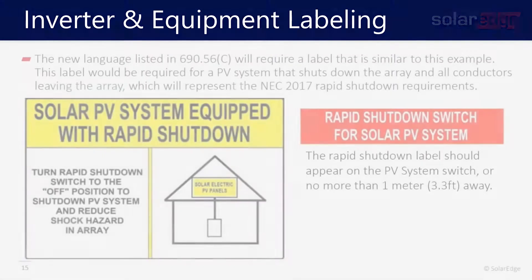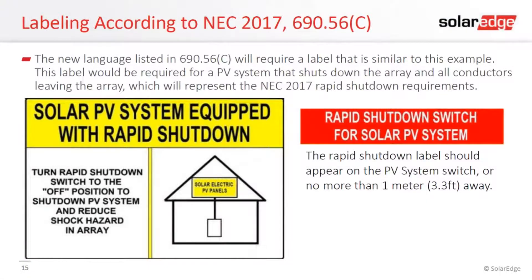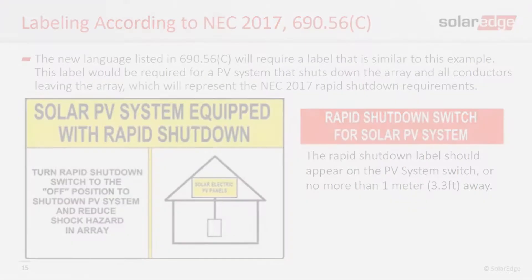Labeling for rapid shutdown changed a little bit in the 2017 code. The label reads: 'Solar PV system equipped with rapid shutdown — turn the rapid shutdown switch to the off position to shut down the PV system and reduce shock hazard.' This informs the first responder that there is less than 80 volts under the array.